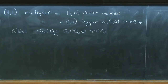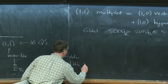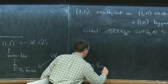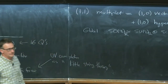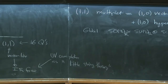Even though the (1,1) theory is infrared free, there is a UV completion called a little string theory. Taking the little string mass M_string to infinity decouples the string modes, and in that limit the (2,0) case can become a conformal field theory.